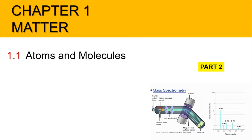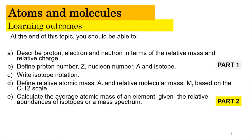Assalamualaikum and a very good morning. We are still in Chapter 1, and now we're going to focus on subtopic 1.1, Atoms and Molecules Part 2. In this video, we're going to look into learning objective E, where we're going to calculate the average atomic mass of an element given the relative abundance of isotopes or a mass spectrum. For learning objectives A to D, I have covered those in the previous video, Part 1. So if you haven't watched that one, please watch it now. In this video, we're only going to focus on learning objective E.